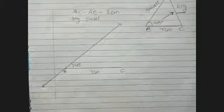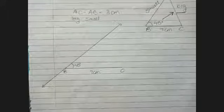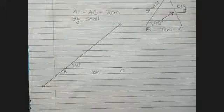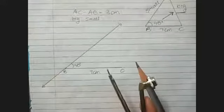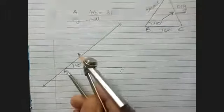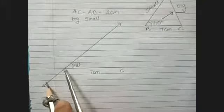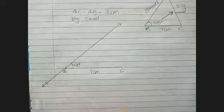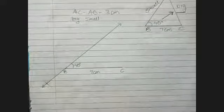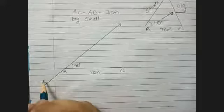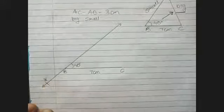The difference given is 3 centimeters, so I measure 3 centimeters on my compass. Then from B, I cut the arc downward — backward along the extended 40-degree line. This is the key difference from Type A where the arc was cut upward.